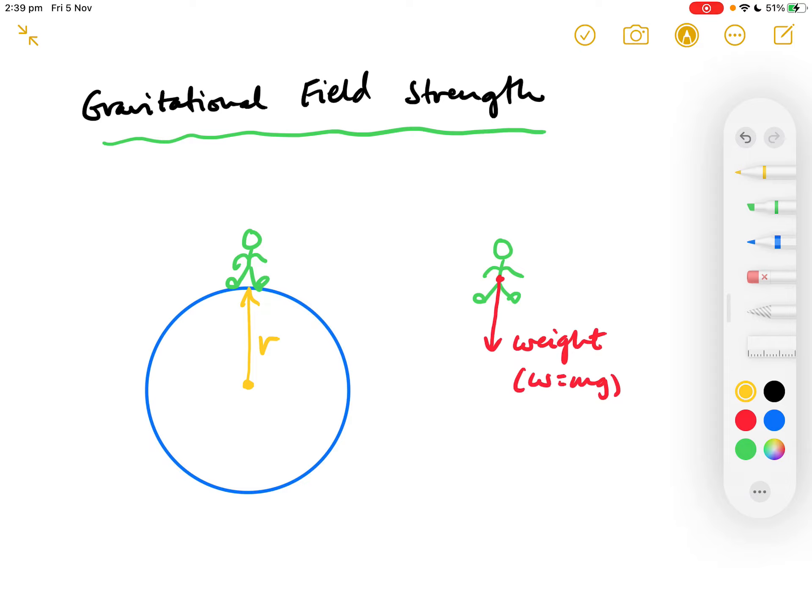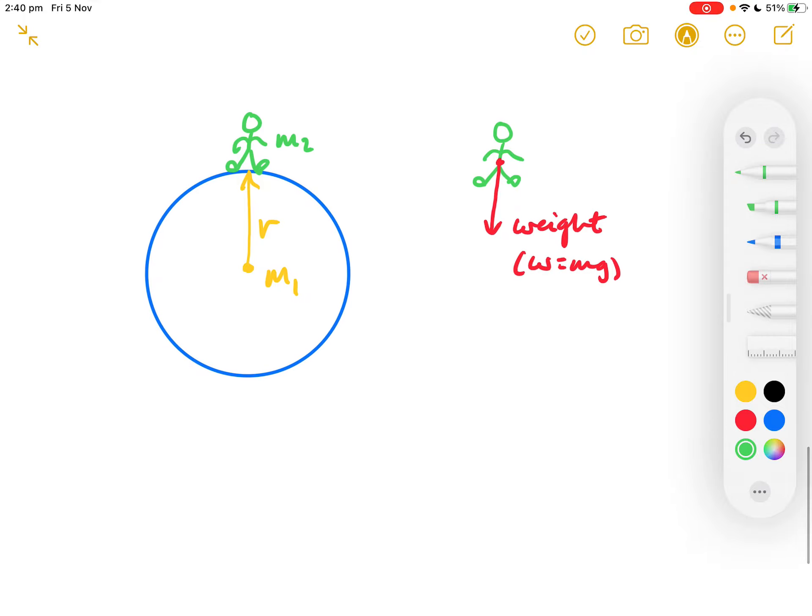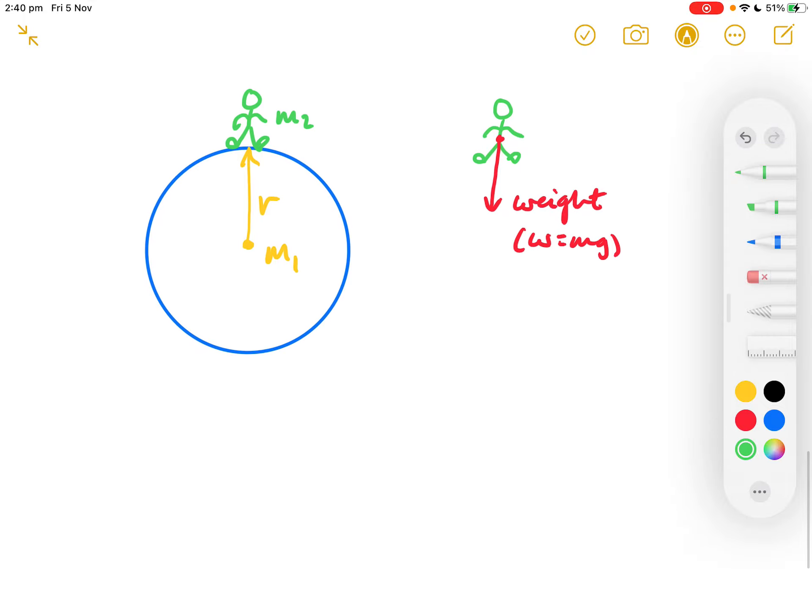Because that person can be thought of as standing a distance r away from the geometric centre of the Earth, where all of its mass can be thought of as acting at that point. So, we can consider the Earth as being M1, its mass acting at that point, and the person being the mass M2, and they're separated by this distance r. Well, if we know the gravitational field strength at the point where we're taking the weight, then it's a well-known number.